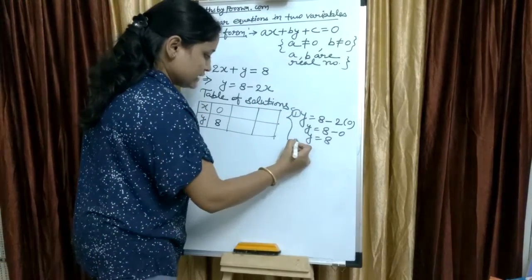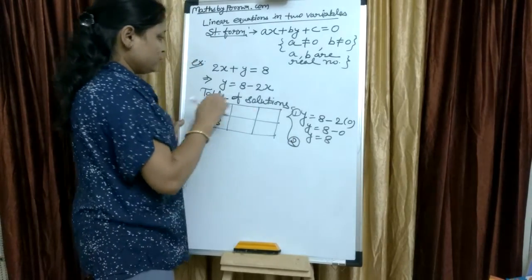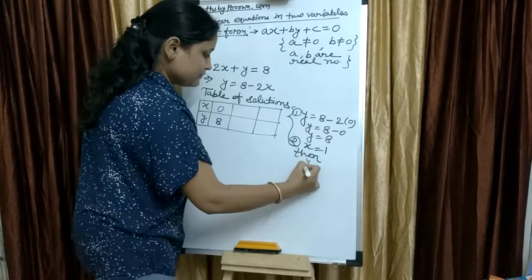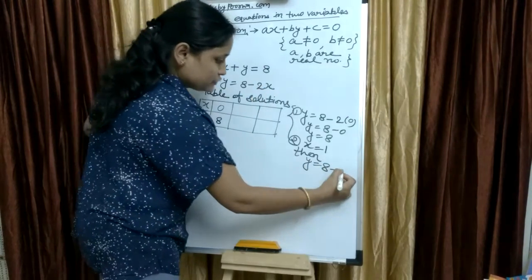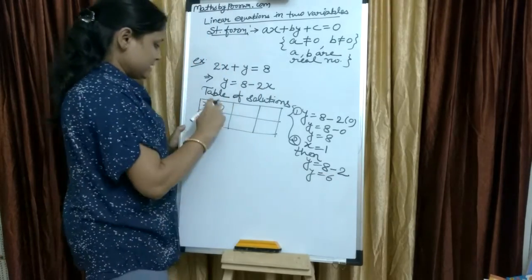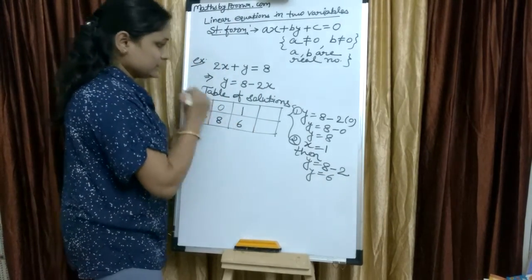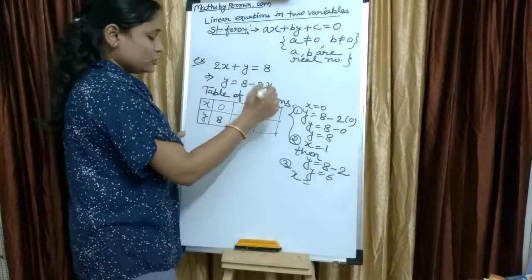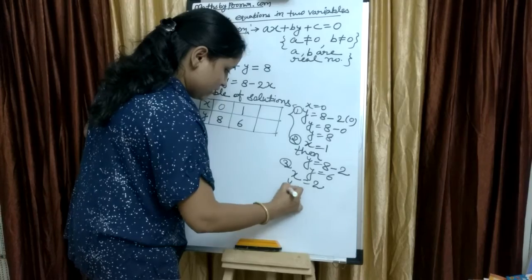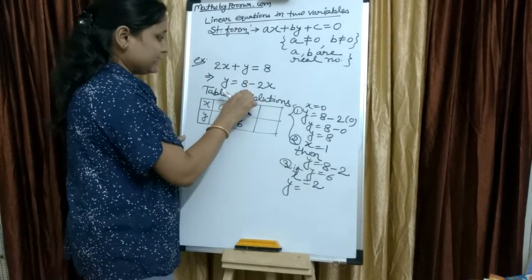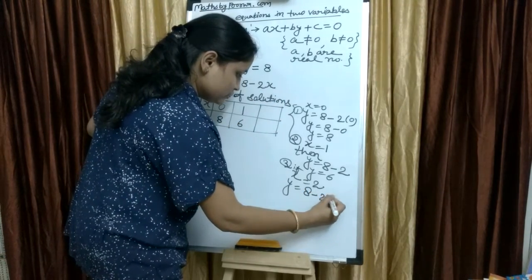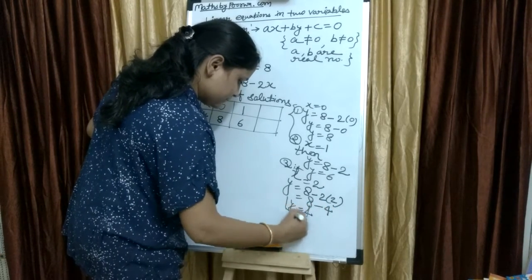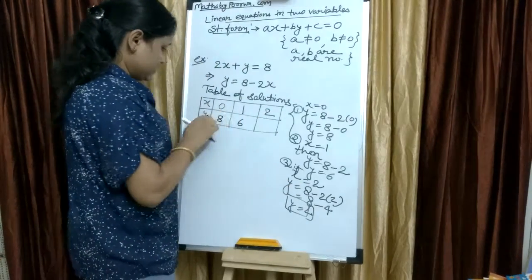This is the first solution. Now, second, if you put x equals to 1, then y equals to 8 minus 2 into 1 means 2. So, y equals to 6. x equals to 1, y equals to 6. And third solution, if x equals to 2, then y equals to 8 minus 2 into 2. 8 minus 4 means y equals to 4.